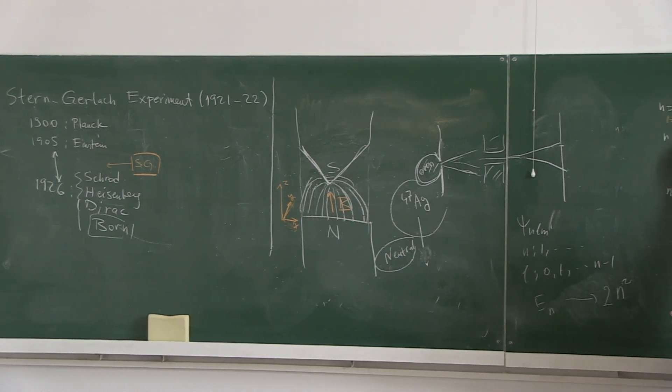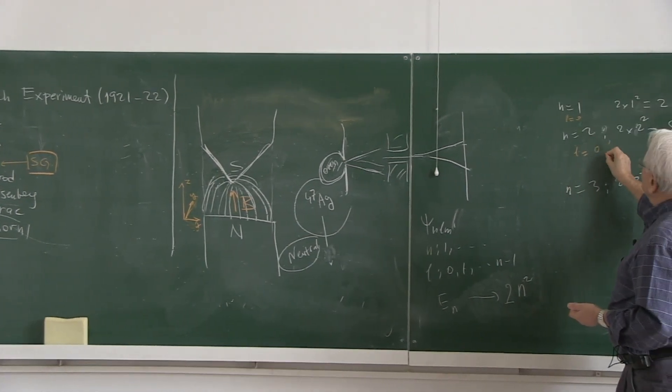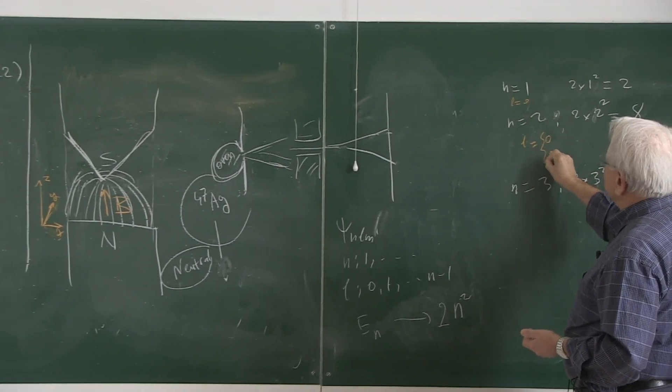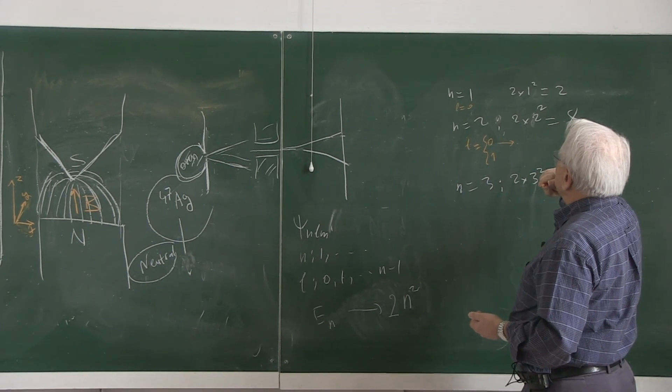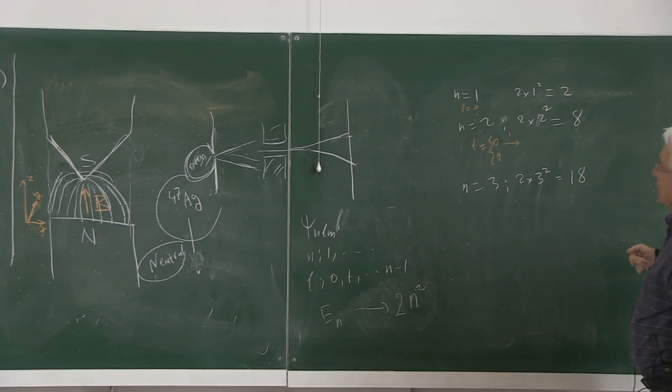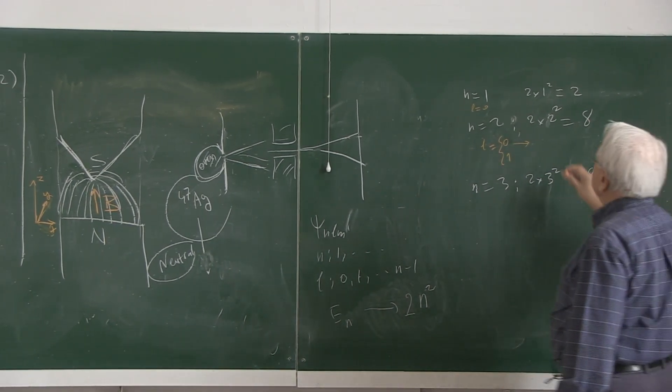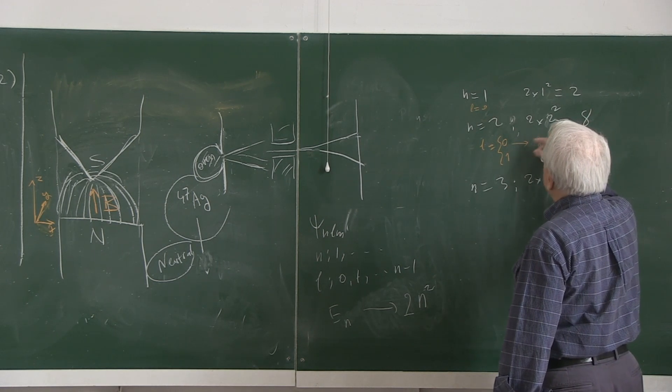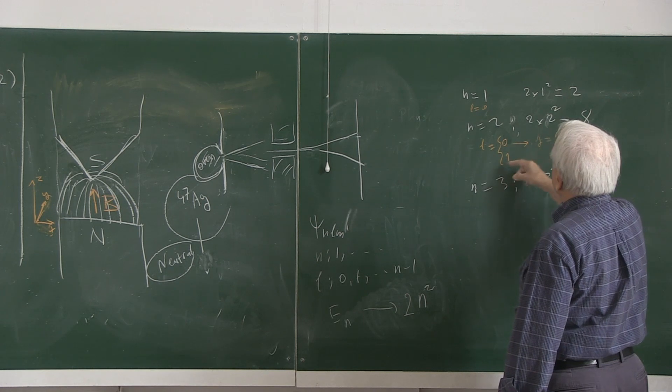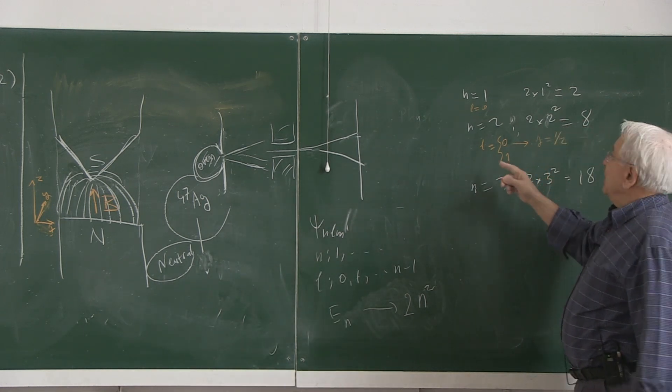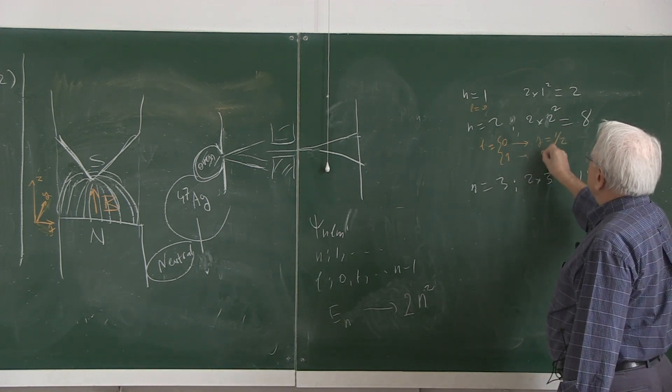For N equals 2, you have a possible value of L is 0 and 1. What is the total spin? Total angular momentum is L minus 1 half, L plus 1 half. It is 1 half. For L equals 1, total spin is 1 half and 3 halves.